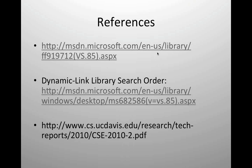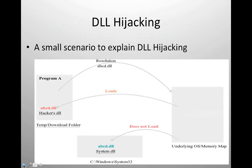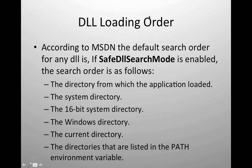Regarding whether the order specified in the PATH system variable matters — no, the OS follows the predefined order shown in the slide. First it picks from the directory from which the application is loaded, then the system directory, then the 16-bit system directory, then Windows directory, then current directory, then the PATH environment variable directories. The order is fixed and we cannot change it.